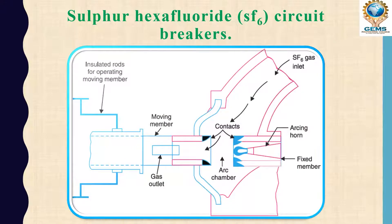Here you can see the SF6 circuit breaker circuit diagram. There is an insulating rod for operating the moving member. This insulating rod operates the moving contact - it can push the moving contact forward and back.